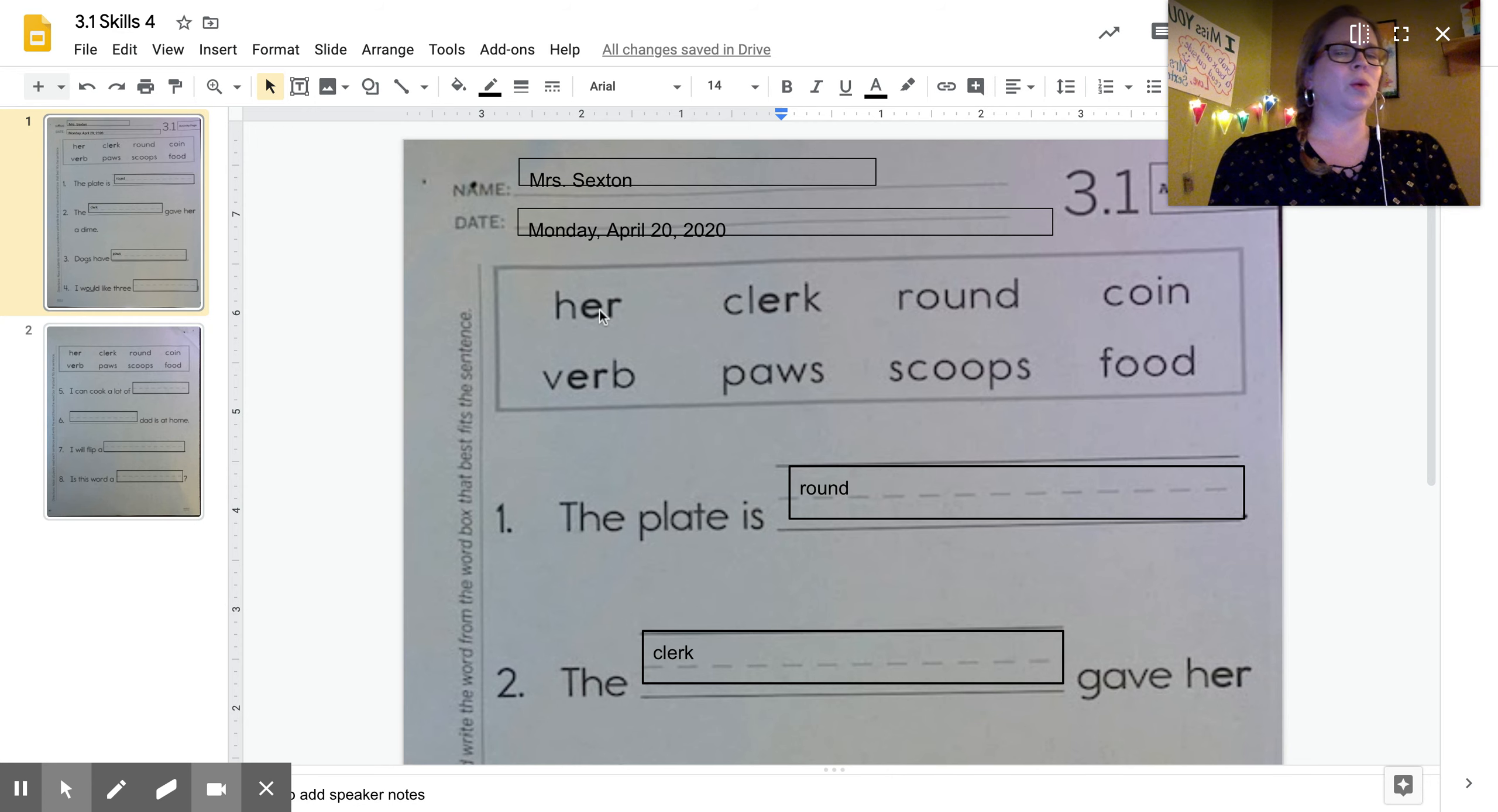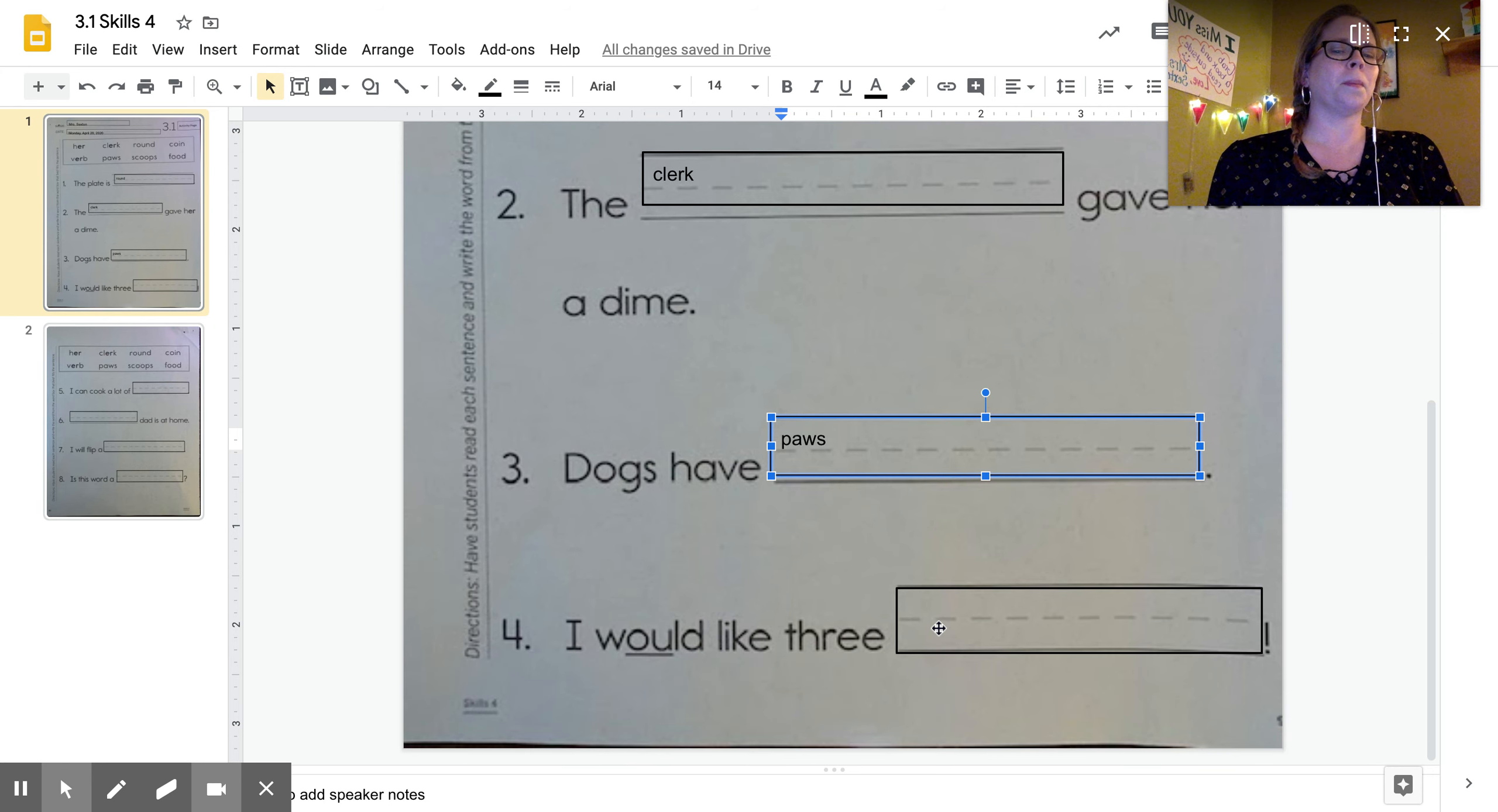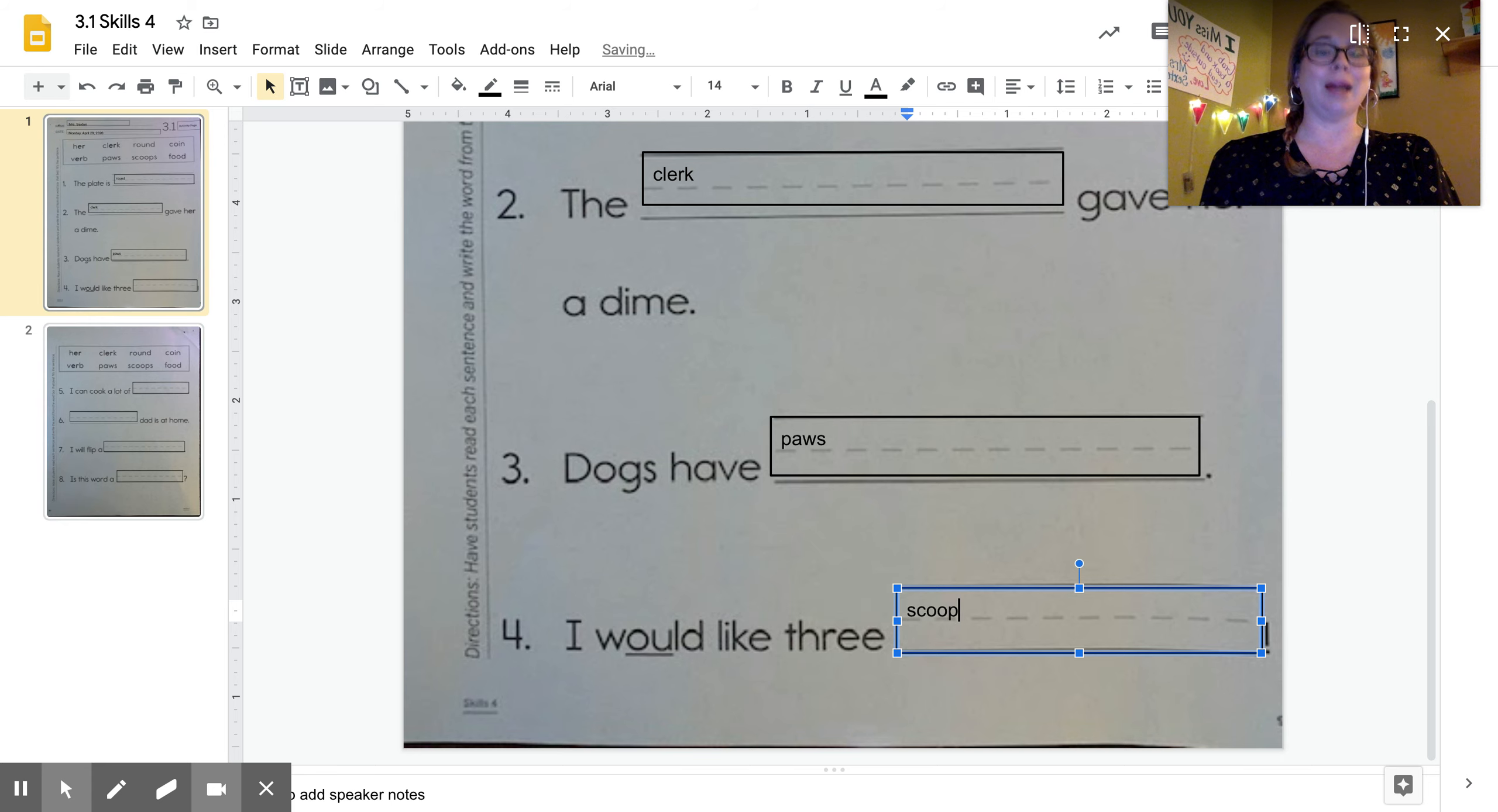I would like three, hmm, I would like three what? I would like three what? Well, let's find some words we haven't used yet. We haven't used her, verb, or scoops. I would like three scoops. I would like three scoops, three scoops of ice cream would be delicious.